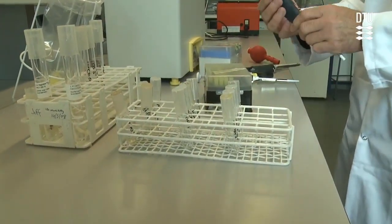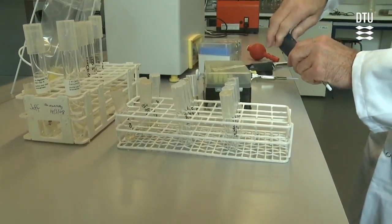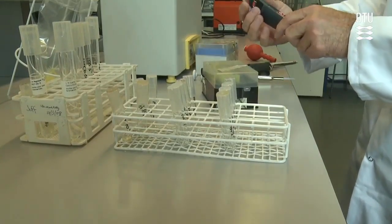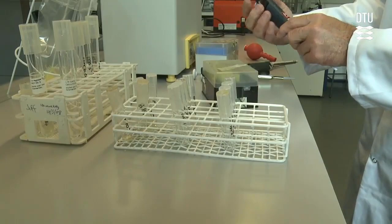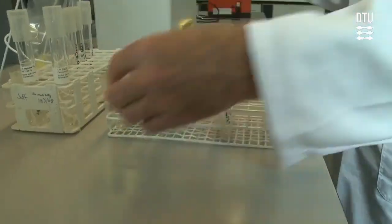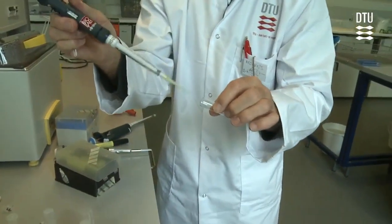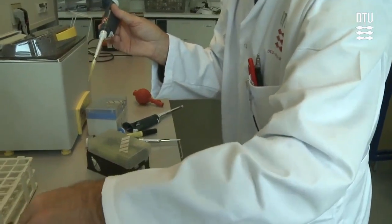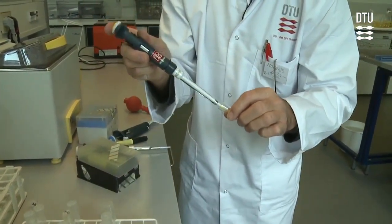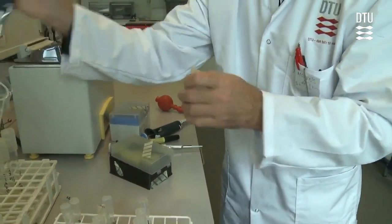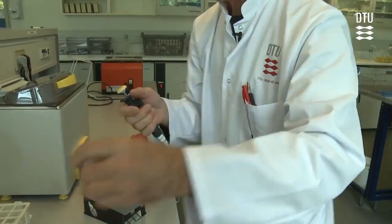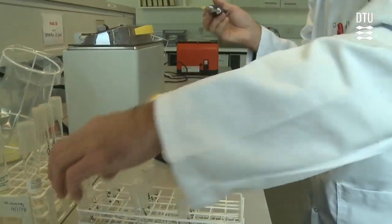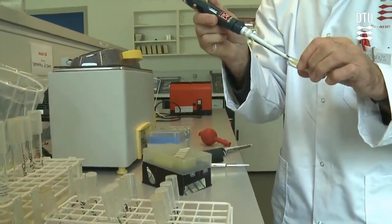The next one is a tenfold dilution. So you should add 110 microliters to one milliliter. Take your 200 microliter pipette and add 110 microliters to this one. You take the 110 microliters from the first phage dilution and add it to the second dilution. Throw away your tip, of course, and then you have to mix it. Then you do exactly the same thing for the next one with a new tip.